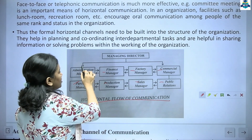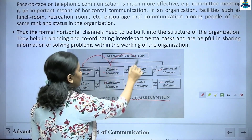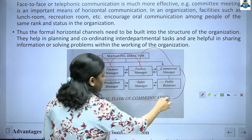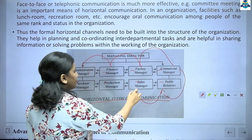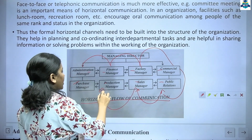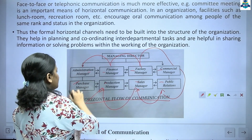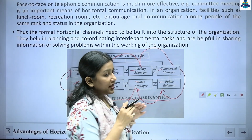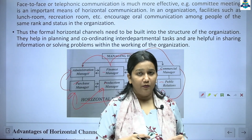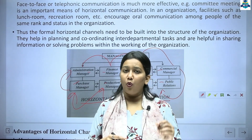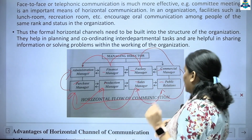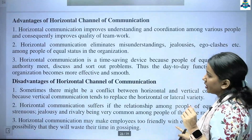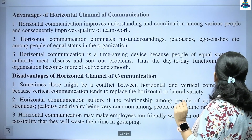If you see the chart in front of you: administration communicates with finance, finance with factory manager, factory manager with commercial manager, commercial manager with the PR department, PR with sales, sales with production, production with purchase, and purchase with administration manager. Because all of these are communicating at the same level, this is called the horizontal flow of communication.